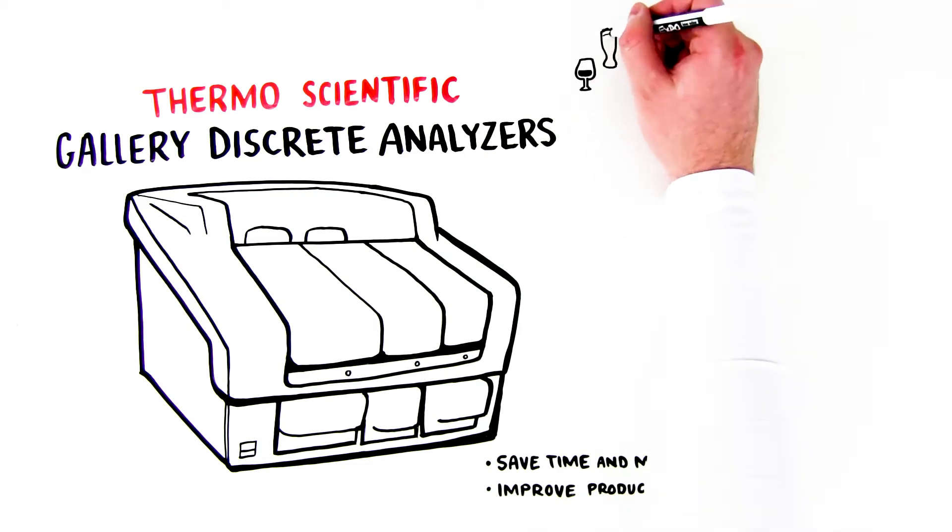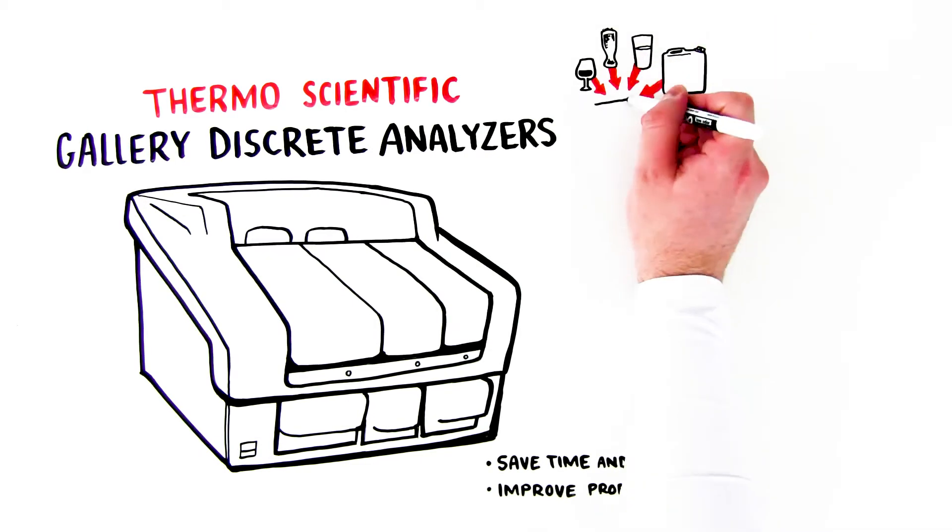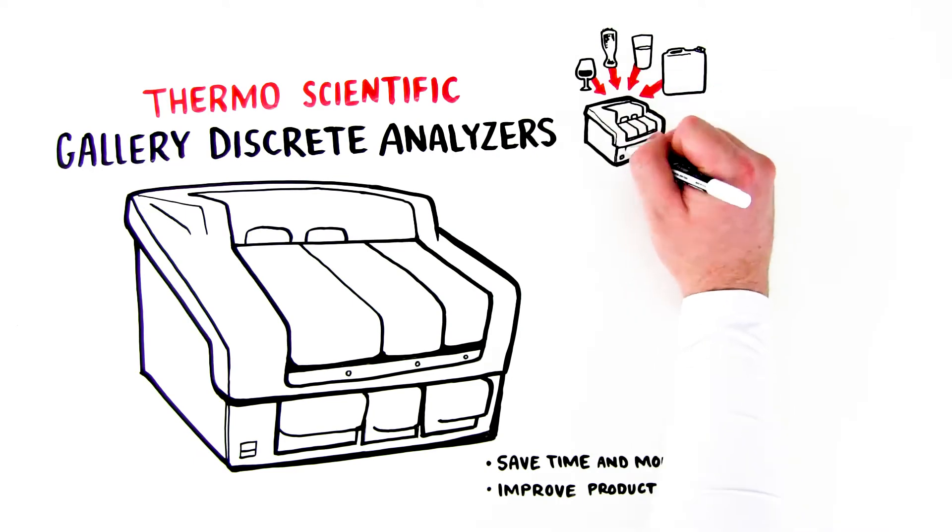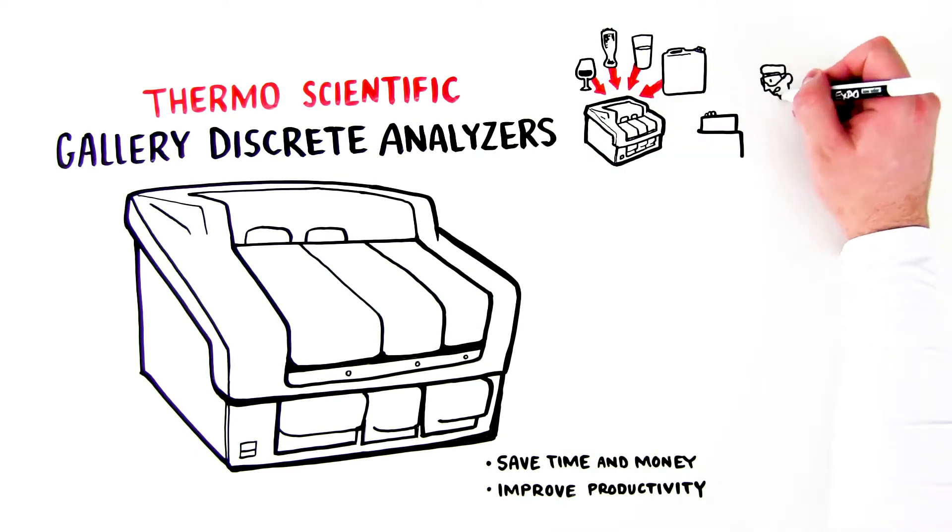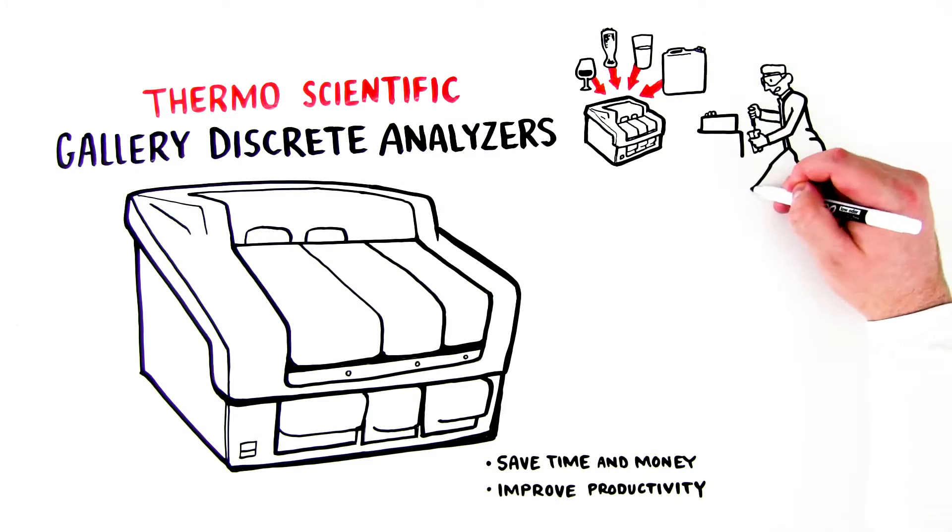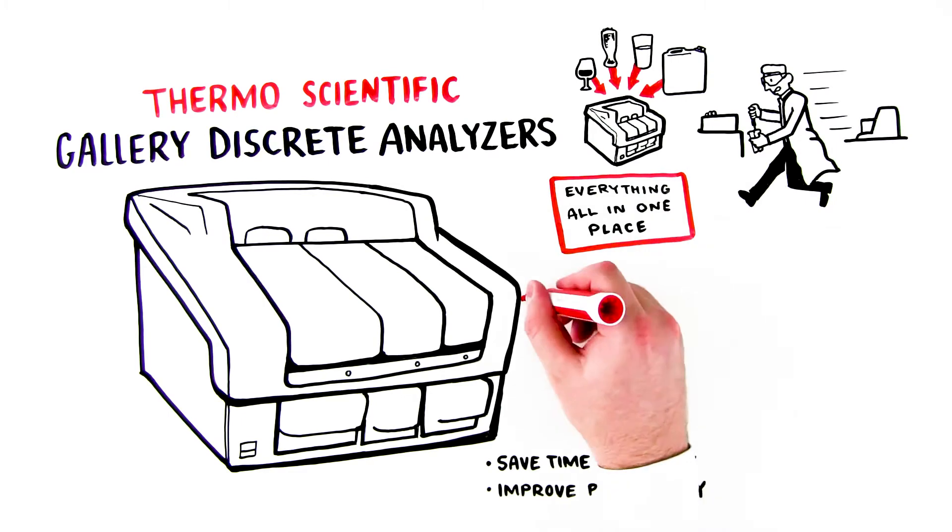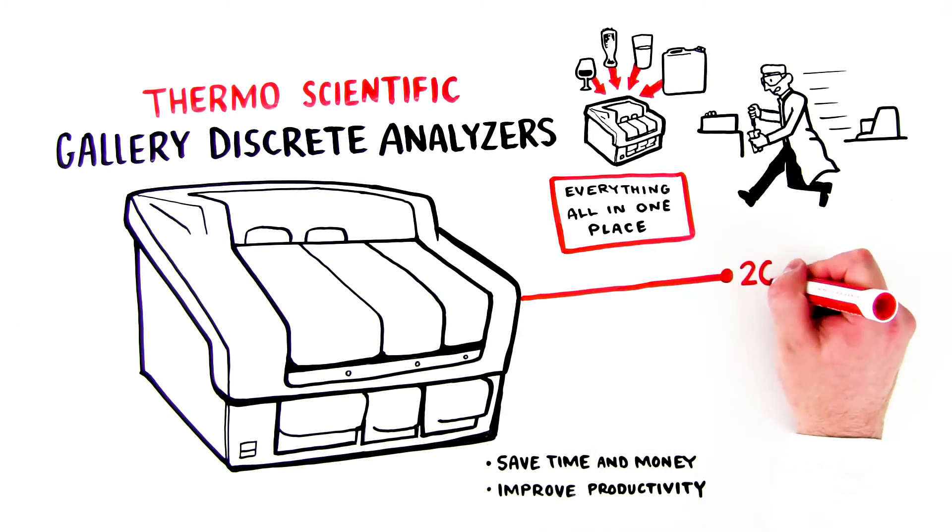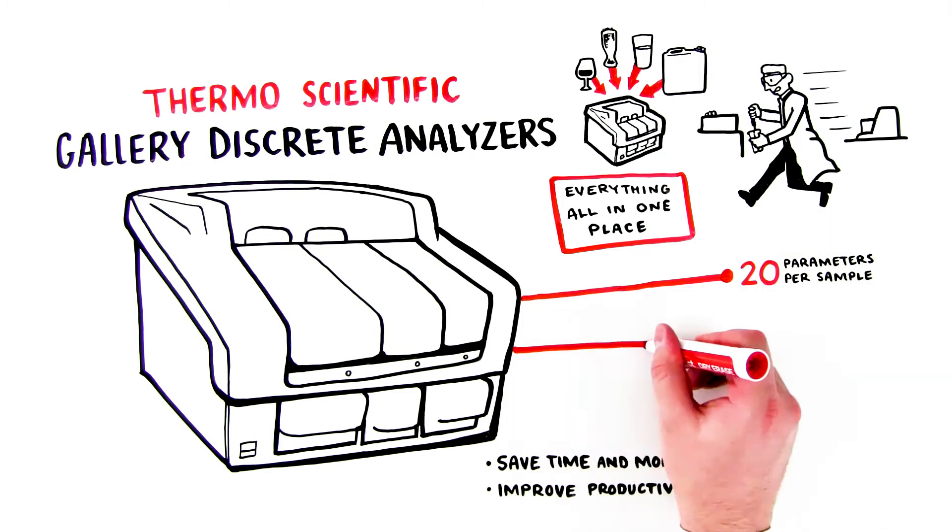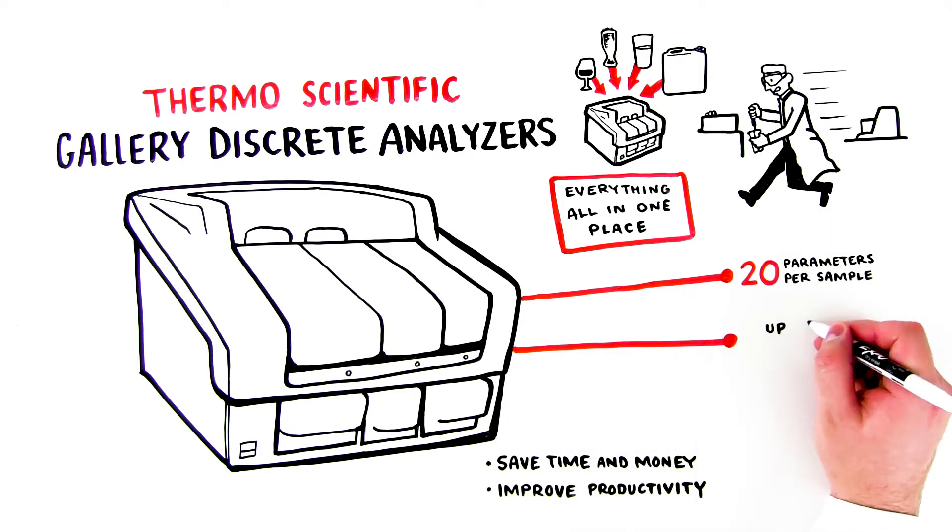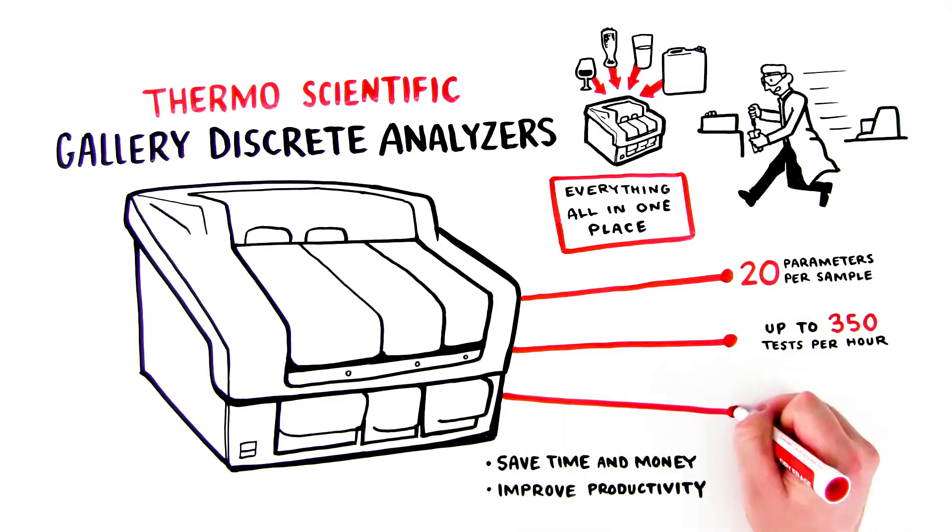By taking everything that used to require multiple pieces of equipment and consolidating it into one easy-to-use unit, the Gallery Discrete Analyzer eliminates the need to scurry around the lab between different analytical instruments, since everything is in one place. It consolidates your wet chemical methods and tests up to 20 different parameters per sample. The Gallery Discrete Analyzer also provides the highest throughput possible, with the ability to perform up to 350 tests per hour, along with parallel pH and conductivity or bitterness measurements.